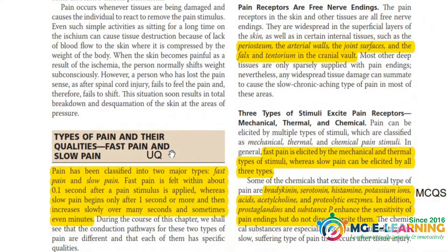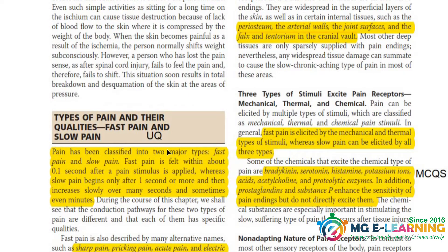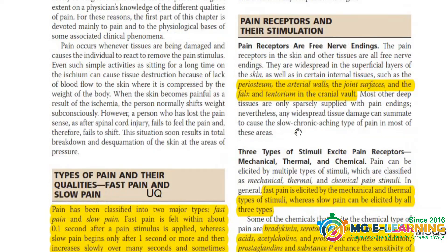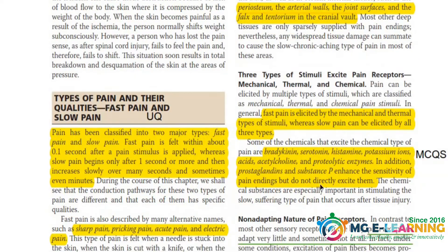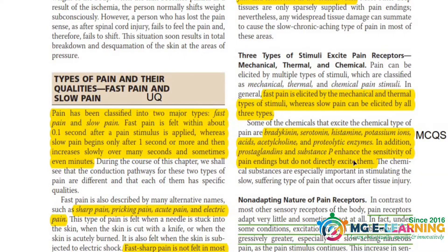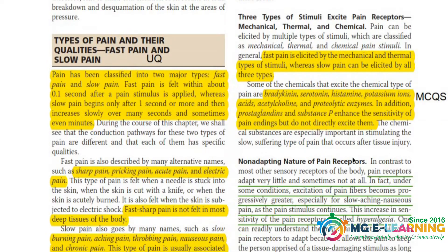Starting our chapter, the main important UQ is types of pain and their differences — that is fast pain and slow pain. You should know about every difference between these pains. This is a very important UQ. The types of chemicals involved are important for MCQs.